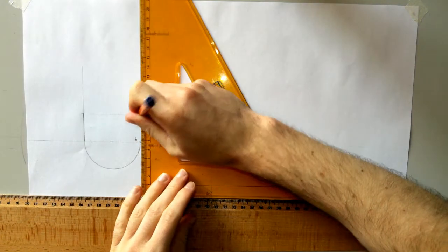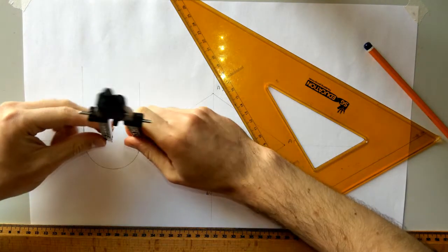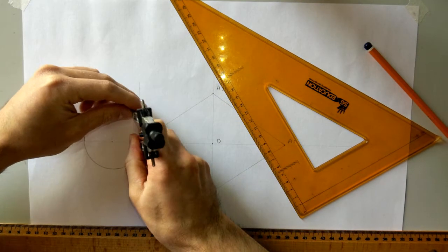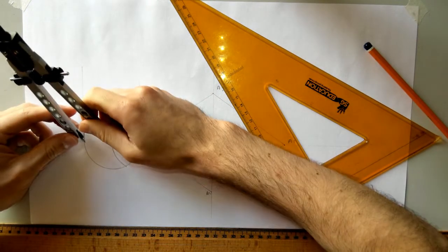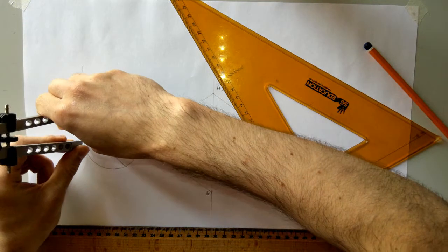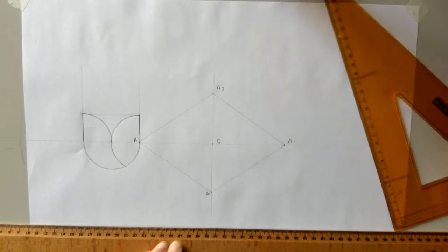And then we can draw them in, so there, there, and then we get our compass, and we use that radius 30 to draw our full semicircle there, and this side is only going to be a quarter circle. That's our logo we're going to have.